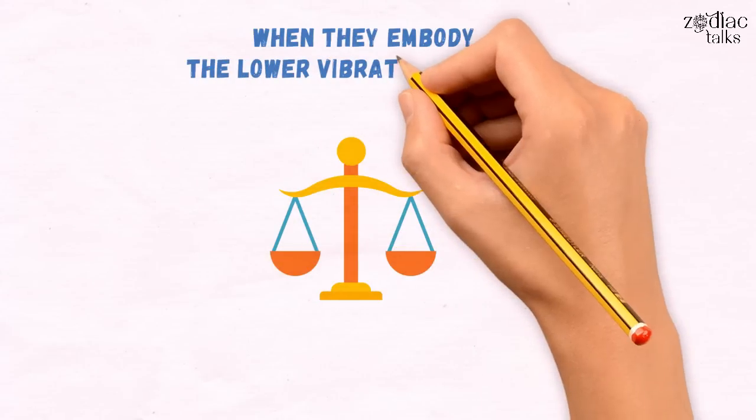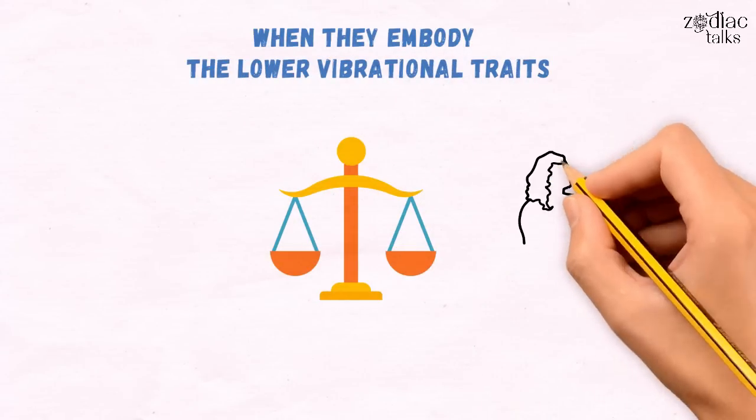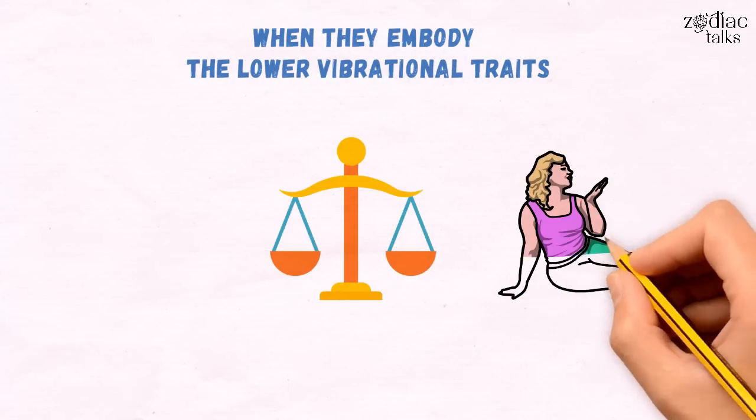Libra. Libra is the only object of the entire zodiac, and when they embody the lower vibrational traits, they can be prone to lying, cheating, and breaking hearts.